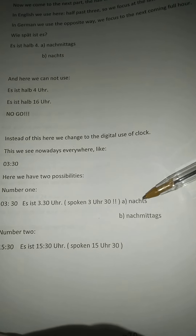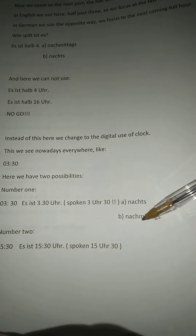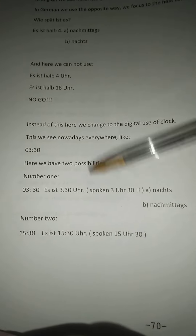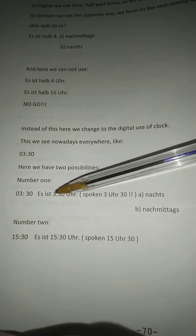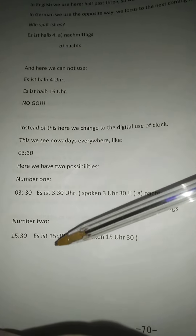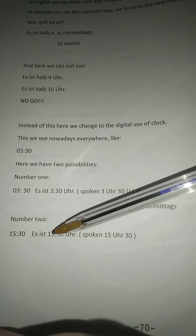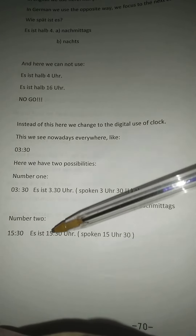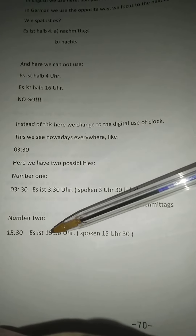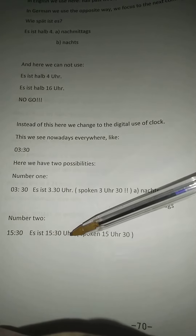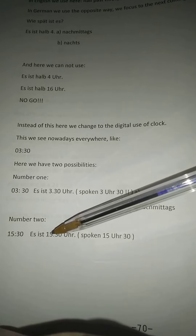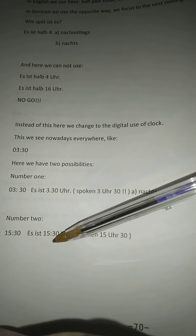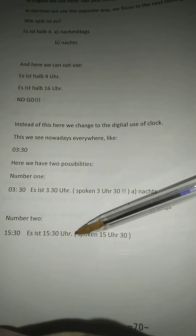Written, it can be 'nachts' or 'nachmittags.' Or, instead of three, since we are in the second half of the day, three becomes 15 — so 15.30 Uhr. Written: Es ist 15.30 Uhr.